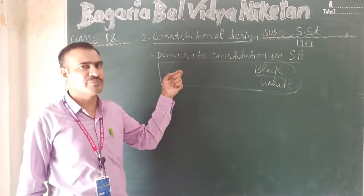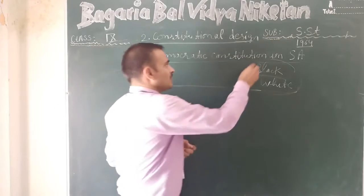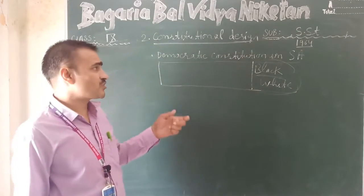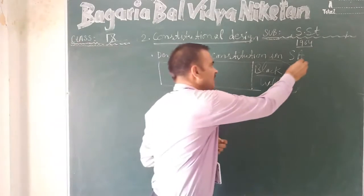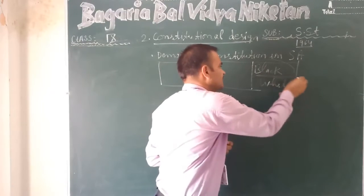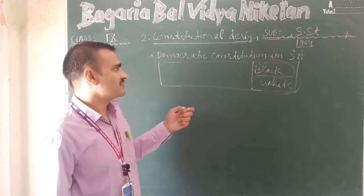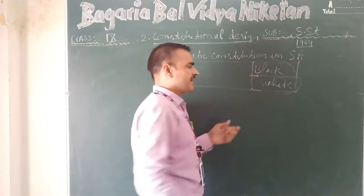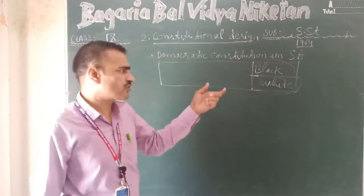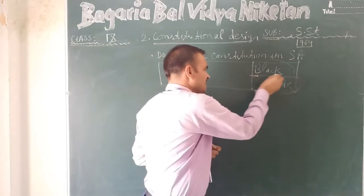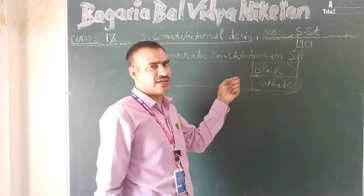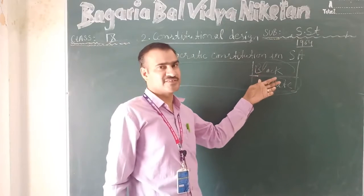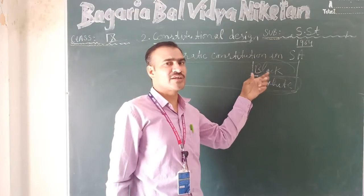They segregated society on the basis of color. The natives of Africa were black. Then after, the Europeans were white. Apart from that, there were colored people, and also Indians — sometimes Indians are also included among the colored.